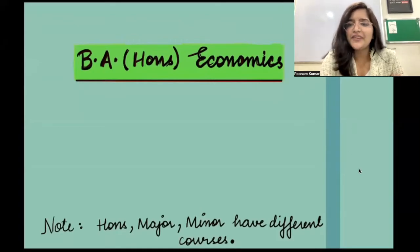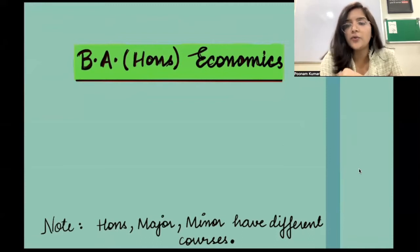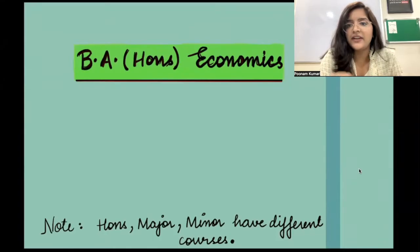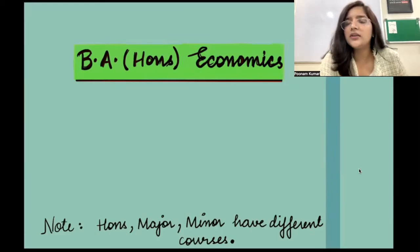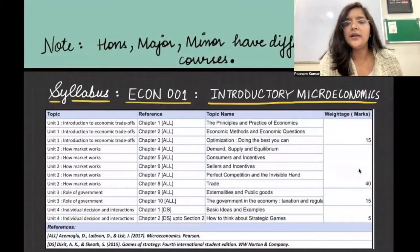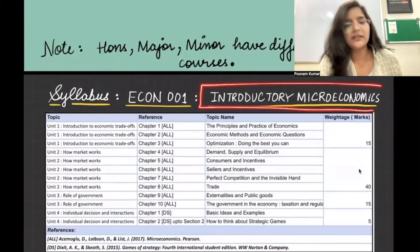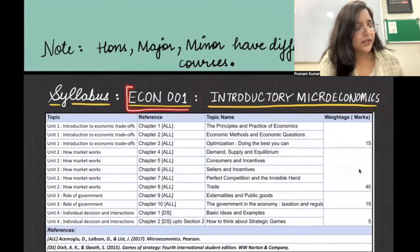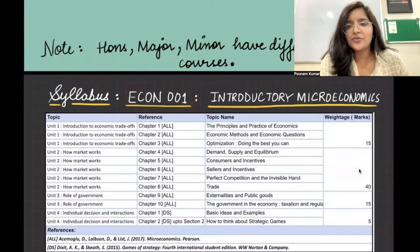We want to talk about the BA Honours Economics course specifically. Please note that if you are pursuing BA Economics Major, Minor, or the multidisciplinary course with Economics as a part, your course is going to be a little different. Whenever there is any course which is common among these different varieties, I will specifically mention it. So firstly, the first course we have is Econ 001, which is called Introductory Microeconomics.